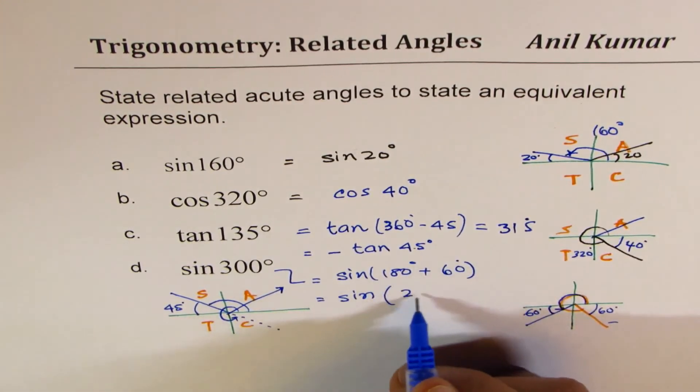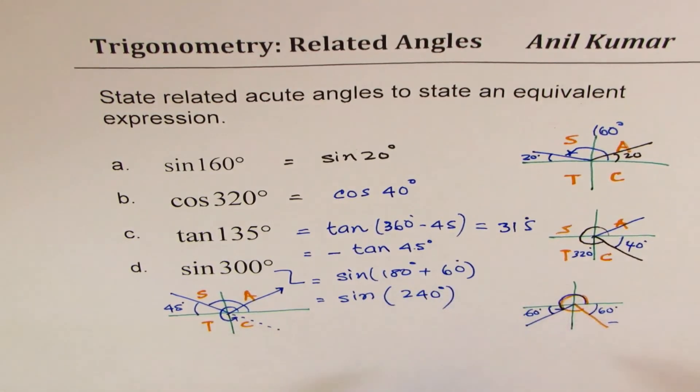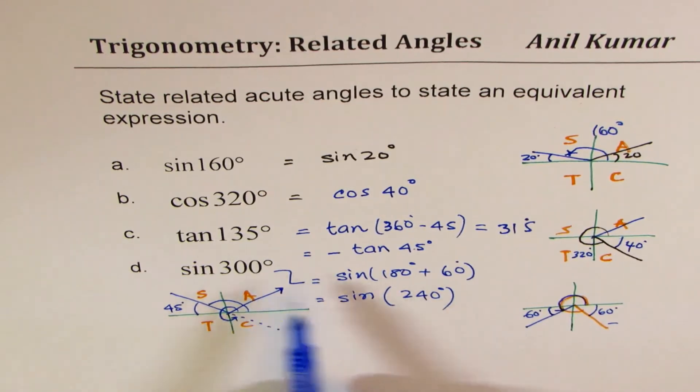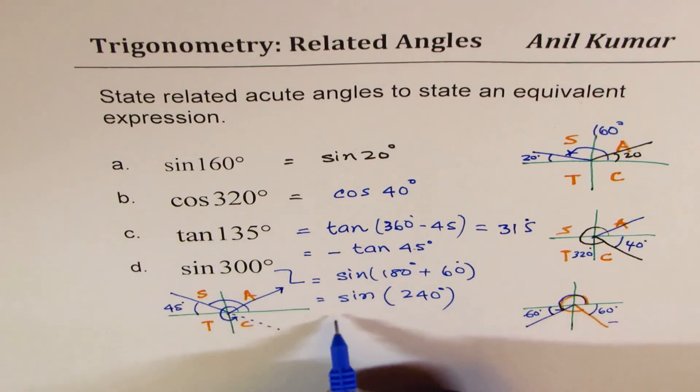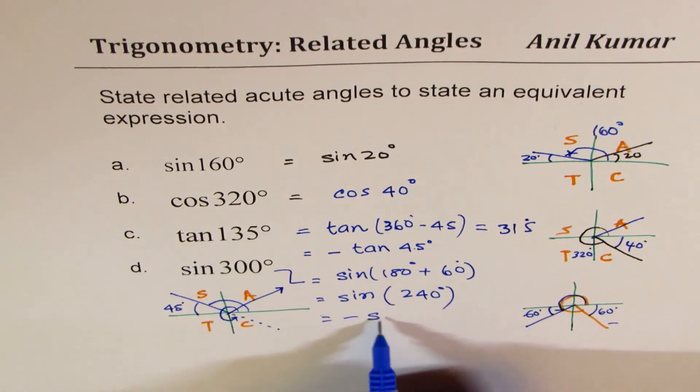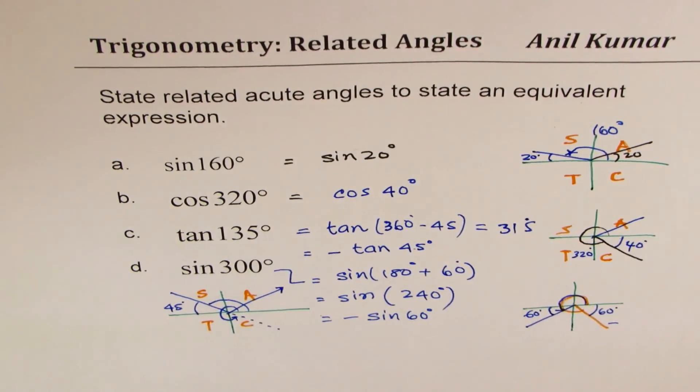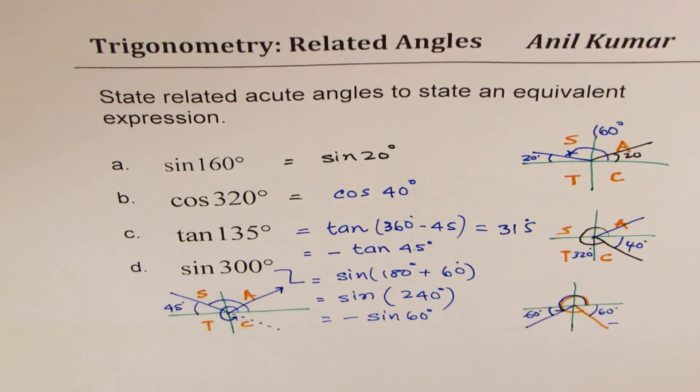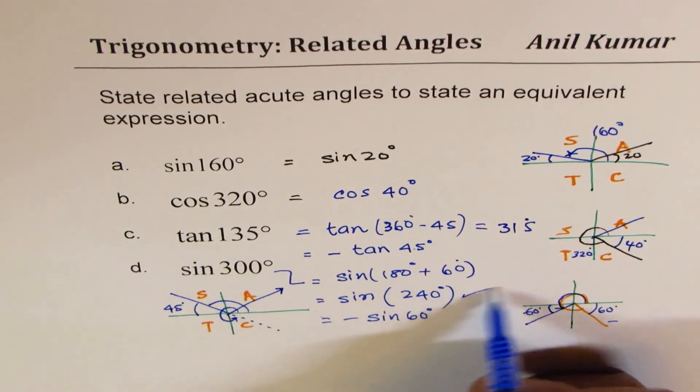So that is how you could get the correct answers. Well, there could be variations to this. You would also use a negative sign at times. Since 60 is the acute angle, we could also write minus sin 60 degrees. That will also give you the same result as sin 300.